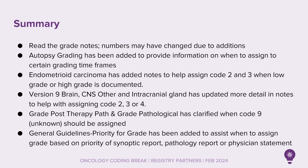In summary: read the grade notes, as numbers may have changed due to additions. Please refer to all notes within the site-specific schemas. Note that the numbers on SEER*RSS may be different depending on the site. Autopsy grading has been added to provide information on when to assign certain grading time frames. Endometrioid carcinoma has added notes to help assign code 2 and 3 when low grade or high grade is documented. Version 9 — brain, CNS other, and intracranial gland — has updated details in the notes to help with assigning codes 2, 3, or 4. Grade post-therapy path and grade pathological have clarified when code 9 should be assigned. The general guidelines priority for grade has been added to assist when to assign grade based on priority of synoptic report, pathology report final diagnosis, or physician statement.